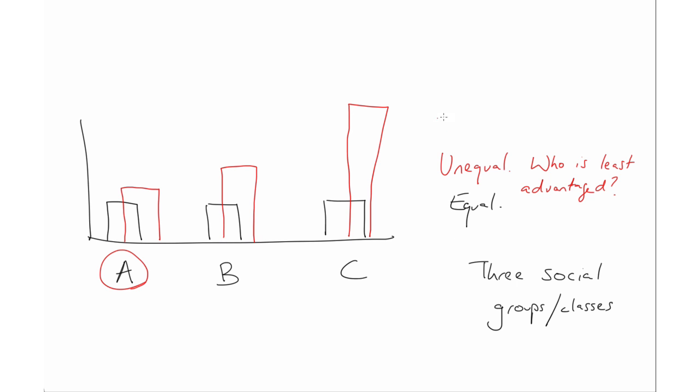Now we ask ourselves, is group A better off under the red distribution than they would have been under an equal distribution, such as the black distribution? Well, yes, clearly, group A's position is better than it was under the equal distribution. So the difference principle would say, this distribution is perfectly just.